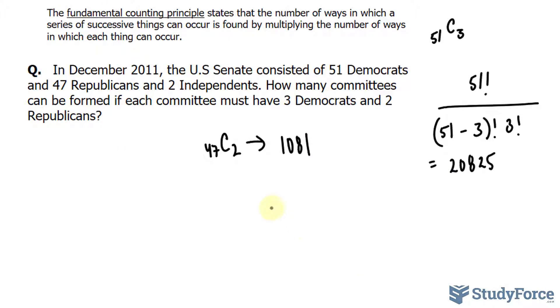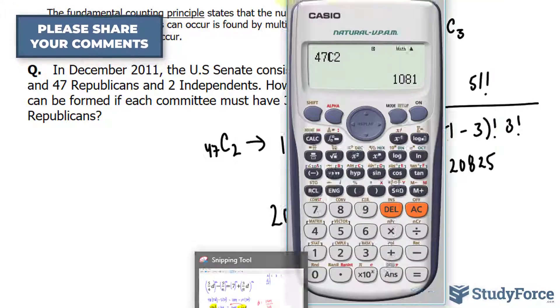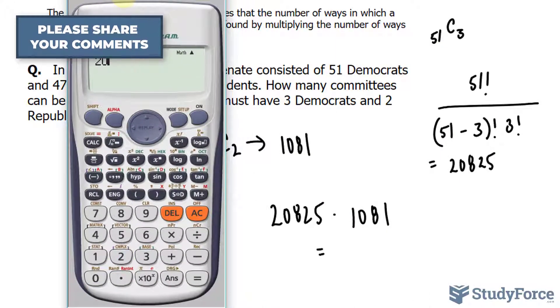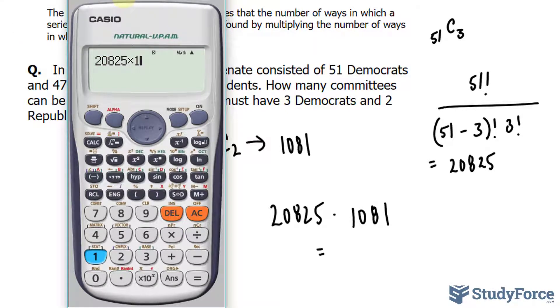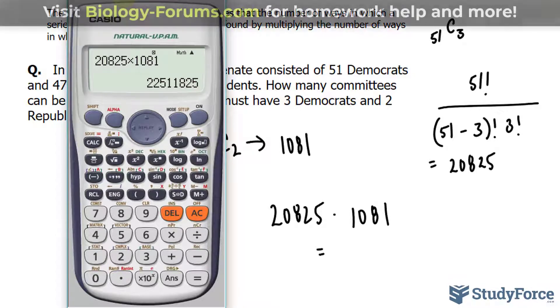So I'll take 20,825 times 1,081. Let's use our calculator one last time. 20,825 times 1,081 and we end up with 22,511,825.